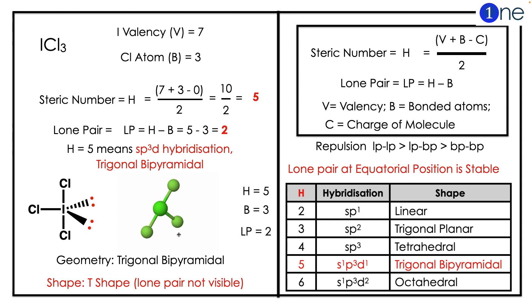To find the hybridization, you should know the steric number. Steric number is V plus B minus C whole divided by two. So iodine valence is seven, chlorine atoms are three. If you substitute in the formula, you have H equals five.